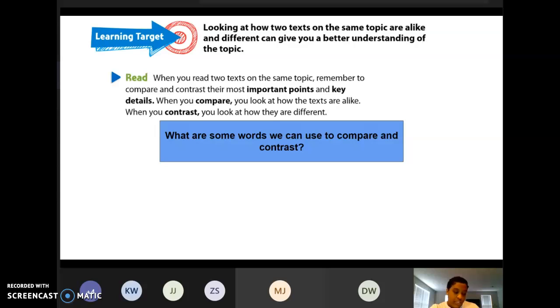Now, what I want you guys to do is get ready to respond in the chat box. What are some words we can use to compare and contrast? What are some clue words that we can use to compare and contrast? For example, a clue word that we use to compare is alike, and a clue word that we use to contrast is different. So when we are trying to look at how things are alike or different, what are some clue words you might use?